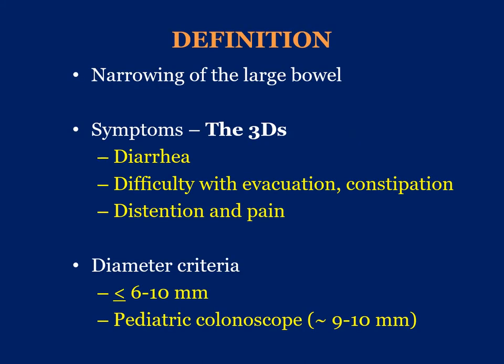First, let's define the colorectal stricture as a narrowing of the large bowel. These symptoms can be summarized by the three Ds: diarrhea, difficulty with evacuation and constipation, and distension and abdominal pain with bloating. If one surveys the literature in terms of diameter criteria, anything less than 6 to 10 mm is considered a stricture. In my own practice, any symptomatic patient who has a stricture that I cannot traverse with a pediatric colonoscope is considered a stricture.